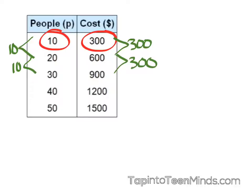And you'll note, if we go back 300, our cost is 0. And if we go back 10 people, our number of people are 0. And thus, we do have a direct variation.